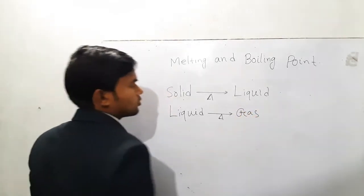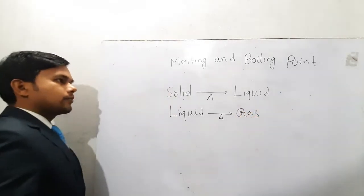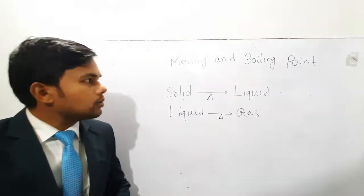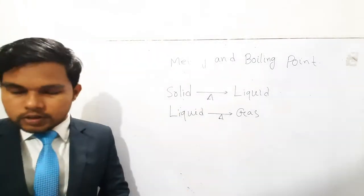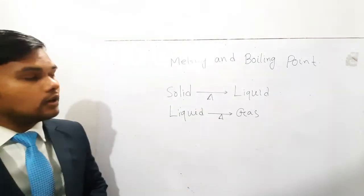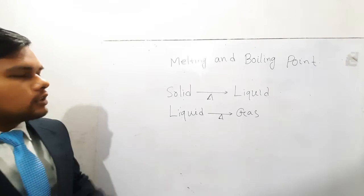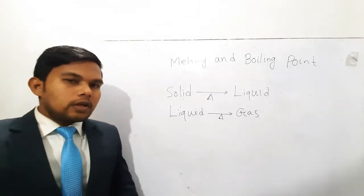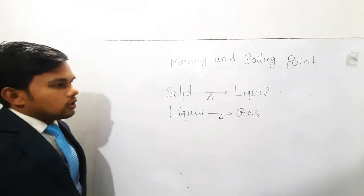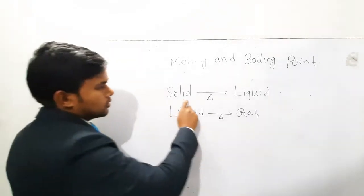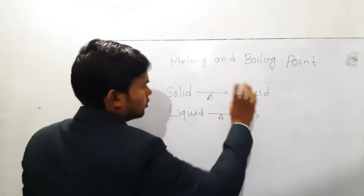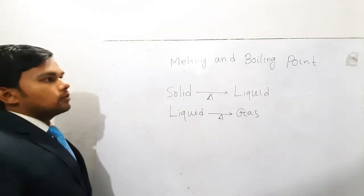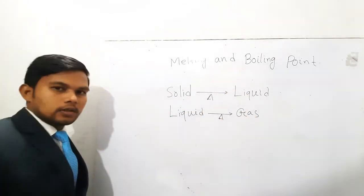When a liquid substance converts to gas on applying heat, this process is called boiling. The definition of melting point: at normal pressure, the temperature at which a solid substance starts to melt and convert into a liquid substance is called the melting point of that substance.